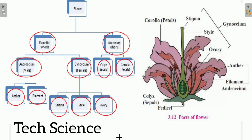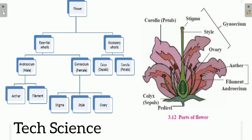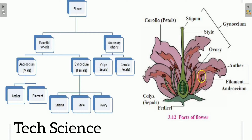Looking at the diagram on the right-hand side, the androecium is visible and is divided into two parts: the anther and the filament. The anther is the upper part, and the filament is the tube-like structure that supports it.